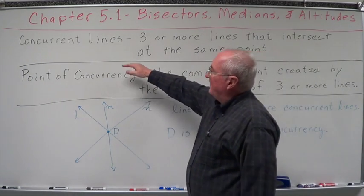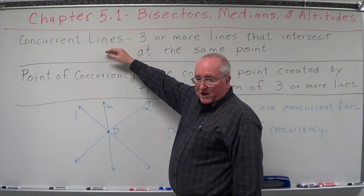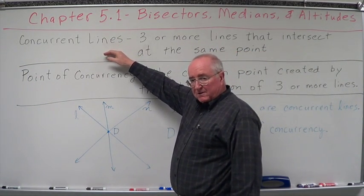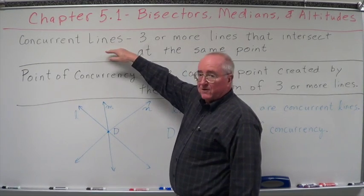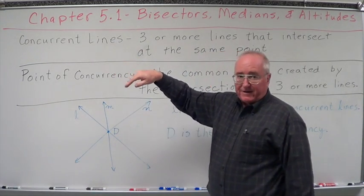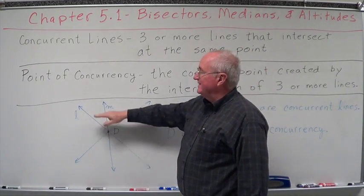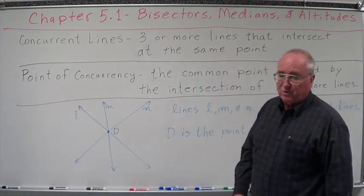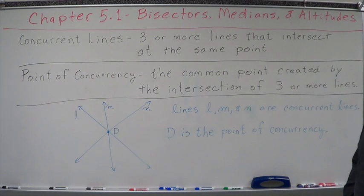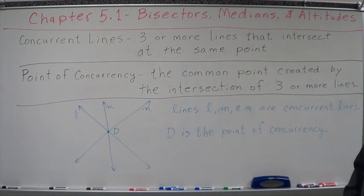The same thing with medians and the same thing with altitudes. But all we're talking about, the foundation we're talking about, is we're talking about drawing lines in triangles that cross all at the same spot. And when that happens, we call them concurrent lines, and their point of concurrency is where they all meet. Okay? Well, let's dive in on one and see what we can do with it.